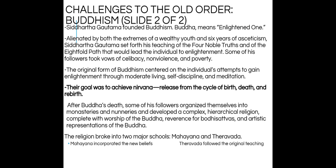The Buddha grew up, married, and fathered a child, but then had four encounters: he noticed an elderly man, a man with a fever, a glimpse of a corpse, and a wandering ascetic wearing a simple robe. After six years of wandering, he began to focus on the simple things and what life was really about. He then set forth to teach the Four Noble Truths and the Eightfold Path that would lead individuals to enlightenment. Some followers took vows of celibacy, non-violence, and poverty, though it was not required.